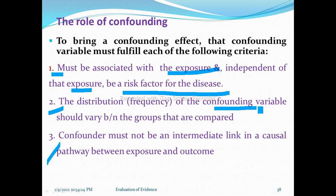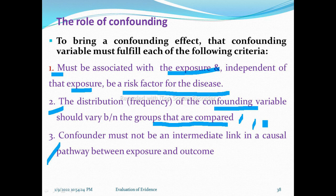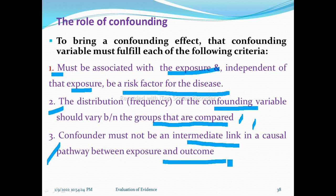Second, the frequency of the confounding variable should vary between the groups that are compared. For instance, between male and female groups, the frequency of the confounder should be different — it should vary, not be equal. Third, the confounder must not be an intermediate link in the causal pathway between exposure and outcome. If all three criteria are fulfilled, we can say it is a confounding variable.